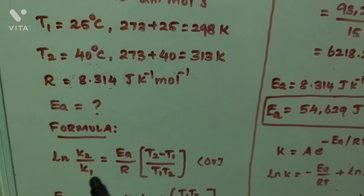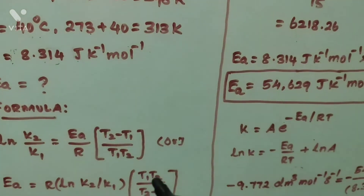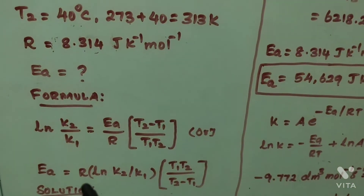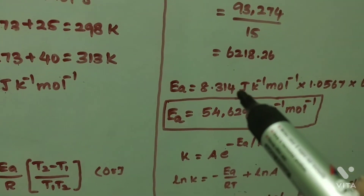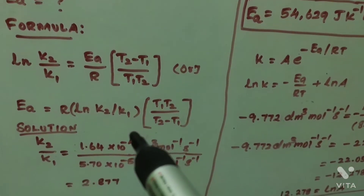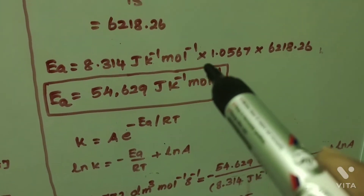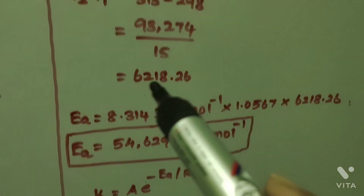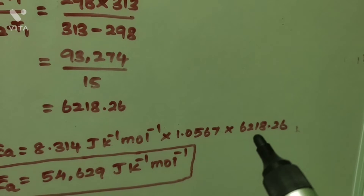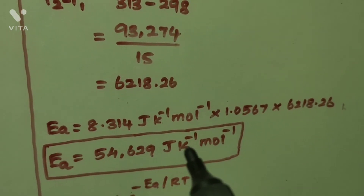Applying the formula: Ea = R × ln(K2/K1) × (T1 × T2)/(T2 − T1). Substituting: R = 8.314 J K⁻¹ mol⁻¹, ln(K2/K1) = 1.0567, and (T1 × T2)/(T2 − T1) = 6218.26. Therefore, the activation energy Ea = 54629 J K⁻¹ mol⁻¹ — that is, approximately 54.6 kJ mol⁻¹.